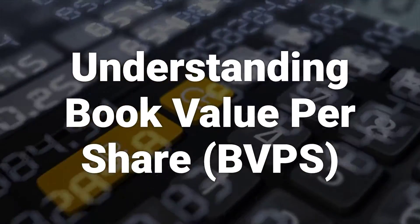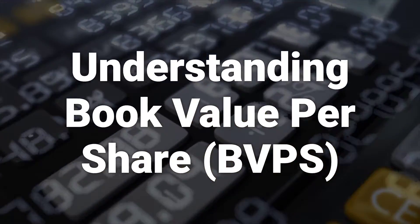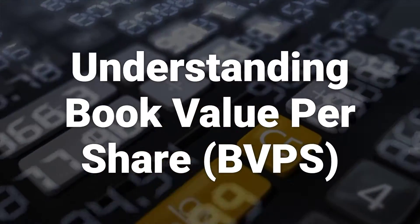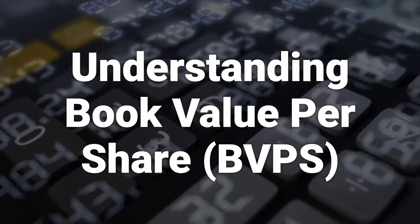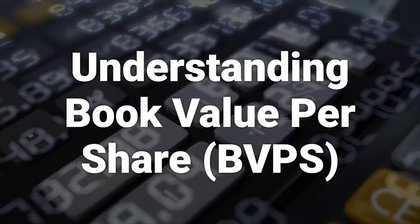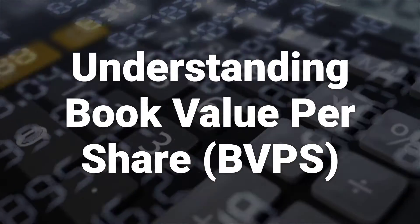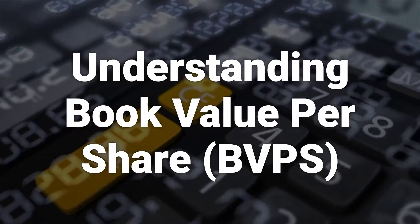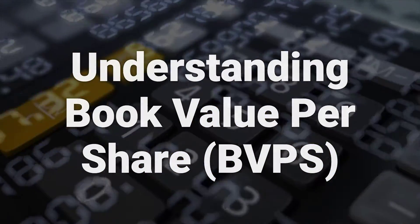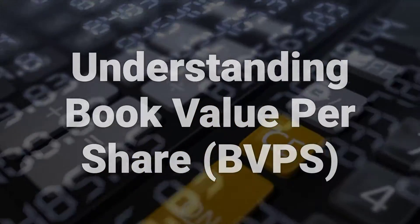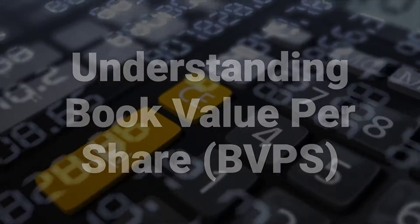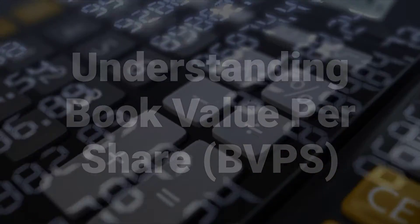An exception to this valuation is in bank stocks, which tend to trade below their BVPS due to their increased risk from trading activities. In theory, BVPS is the sum that shareholders would receive in the event that the firm was liquidated, all of the tangible assets were sold, and all of the liabilities were paid. However, as the assets would be sold at market prices and book value uses the historical costs of assets, market value is considered a better floor price than book value for a company.